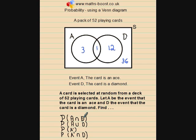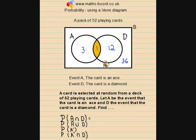Using the rule — number of outcomes in the event divided by the total — we're asked for the probability of A intersection D, in other words where A and D overlap. This is asking for the probability of getting an Ace and a Diamond, so the Ace of Diamonds. That area has one outcome out of a total of 52, giving us a probability of 1/52.